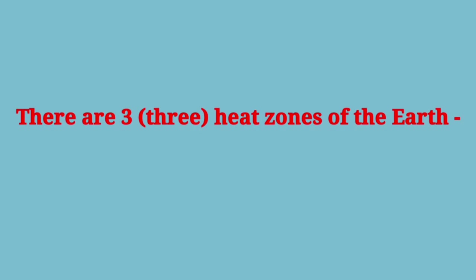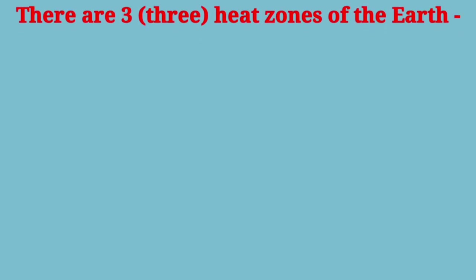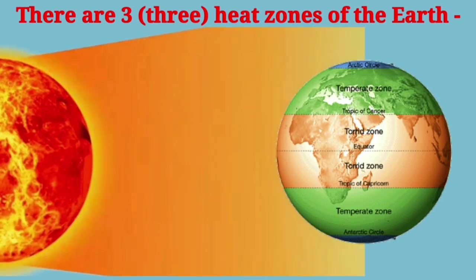Heat zones are the different zones of the earth where the sun's rays fall differently, thus causing different climate patterns. The sun's rays fall straight in some areas and slanting in others.